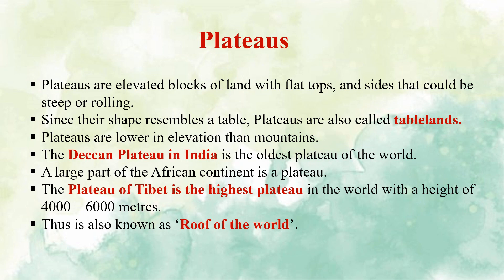Compared to the mountains, mountains are generally cone-shaped structures and are highly elevated areas. But plateaus are elevated land with flat tops and sides that could be steep or rolling. Since their shape resembles a table, plateaus are also called table lands. Plateaus are lower in elevation compared to mountains.